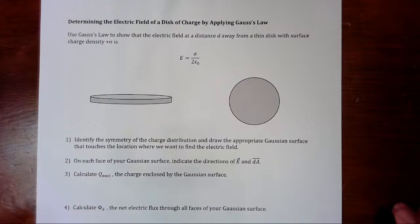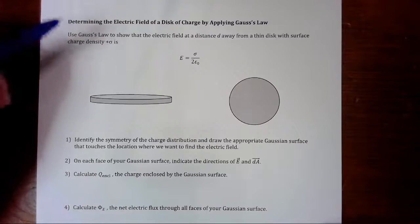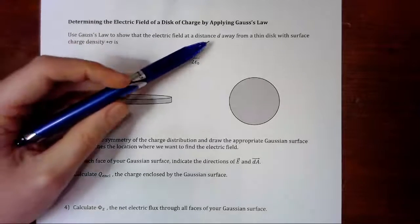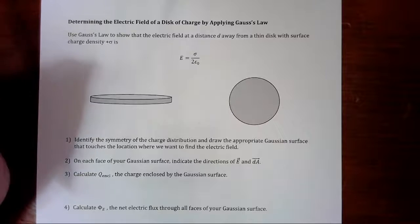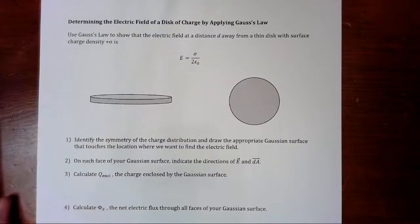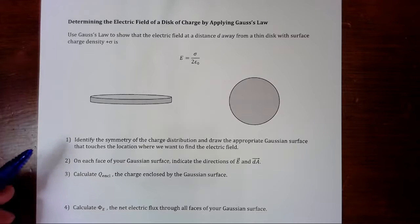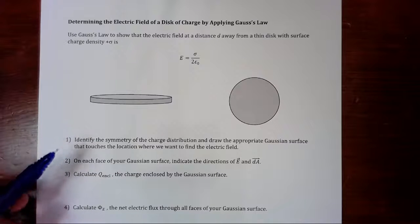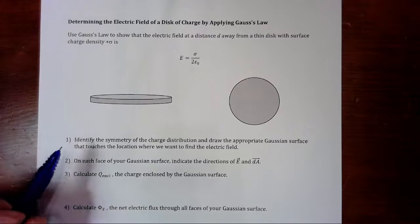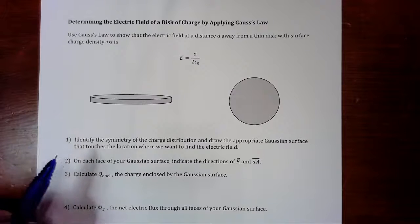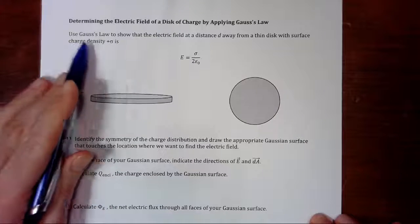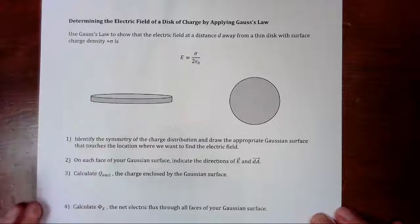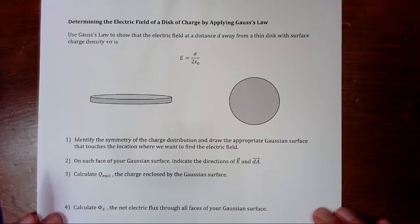In this video, we are going to find the formula for the electric field due to a disk at a distance d away from that disk by using Gauss's law. We had done this previously by using the capacitor equation, but in this case we are going to use Gauss's law. You need to be able to do it both ways, because sometimes on the AP they will specifically say use Gauss's law to show that, and you have to use Gauss's law for those questions.